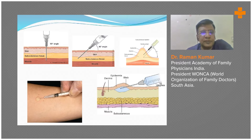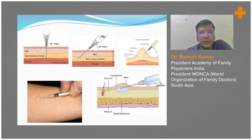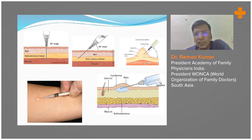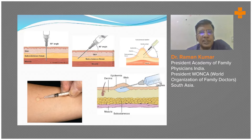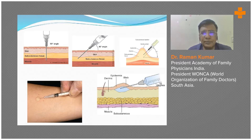Intradermal injection is within the dermis — a more superficial level. The Mantoux test is done this way, and BCG is also given intradermally. You can see a bleb is formed. The angle for intradermal is 15 degrees, subcutaneous is 45 degrees, and intramuscular goes directly into muscle at 90 degrees vertical.